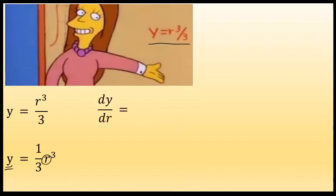The notation for this is dy over dr, and this stands for the derivative of Y with respect to R.